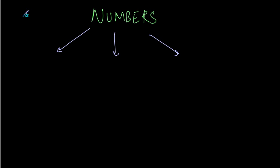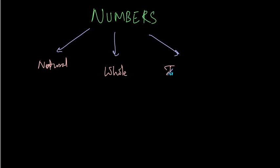The first one is natural numbers, there can be whole numbers, and there can be integers. For the sake of this course we are going to look at natural numbers, whole numbers and integers.